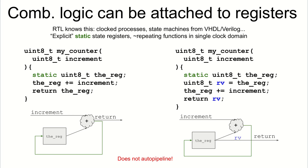In addition to combinatorial logic, we can get registers into the mix and truly be doing register transfer language. If you have a my_counter module with a static local variable, that infers registers for state. The dataflow is derived from the C code — how variables are used and assigned — so you have complete control over how and when registers are used.